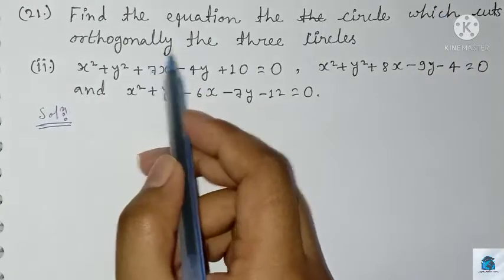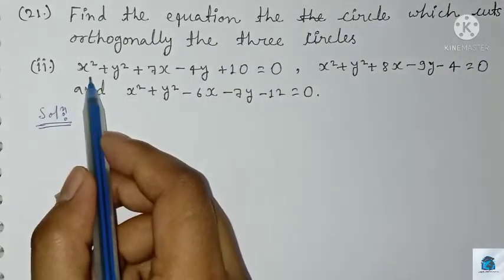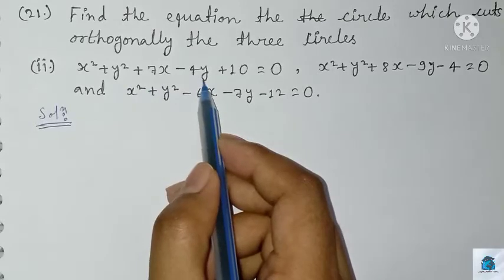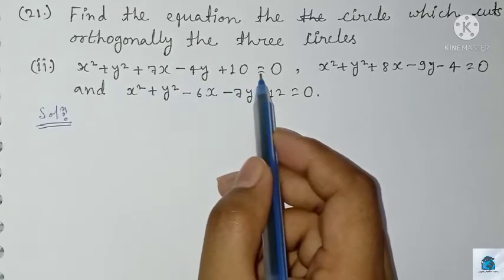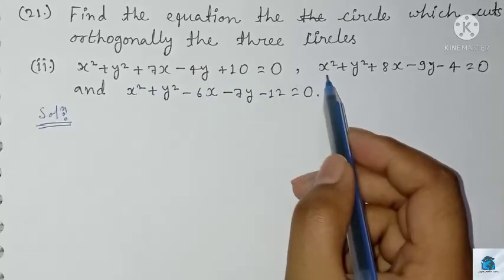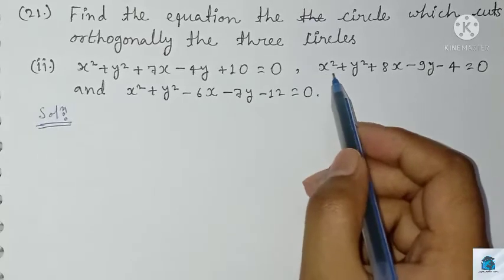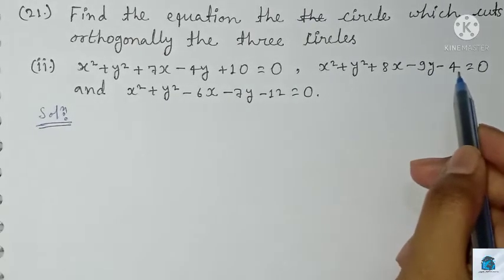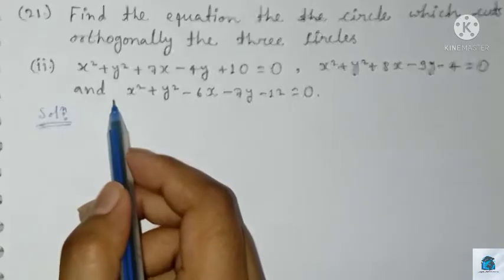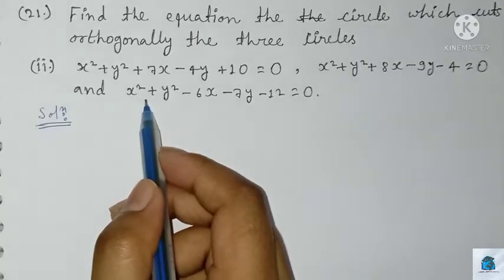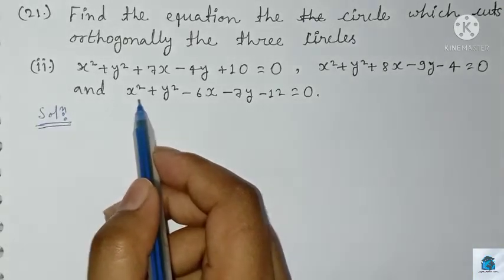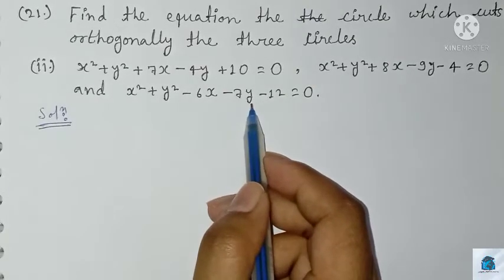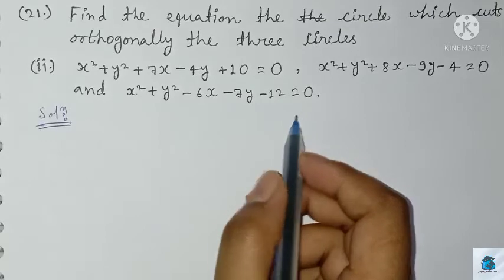which cuts orthogonally the three circles: x² + y² + 7x - 4y + 10 = 0; x² + y² + 8x - 9y - 4 = 0; and x² + y² - 6x - 7y - 12 = 0.